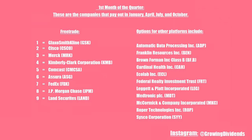For the first month of the quarter, these are the companies that pay out in January, April, July and October. There is GlaxoSmithKline, Cisco, Merck, Kimberly Clark Corporation, Comcast, Asura, FedEx, JPMorgan Chase and Landsec.